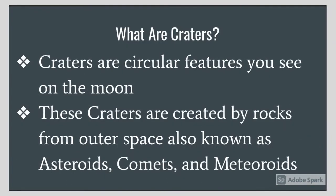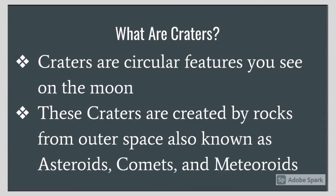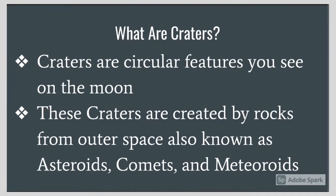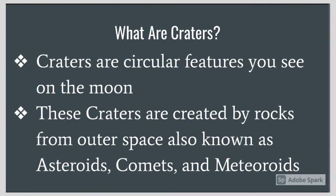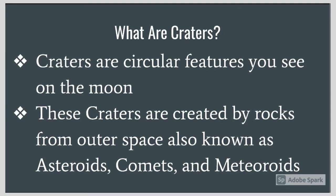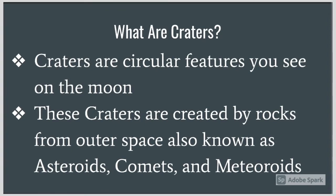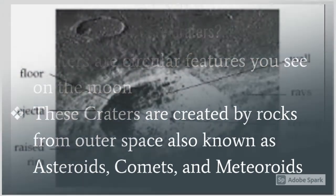Craters are circular features you see on the moon. They are the results of asteroids, comets, or meteoroids colliding with the moon's surface. These objects collide with the moon at a variety of speeds, but the average speed is 20 kilometers per second.